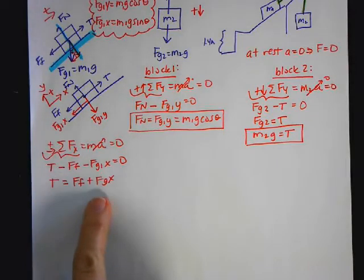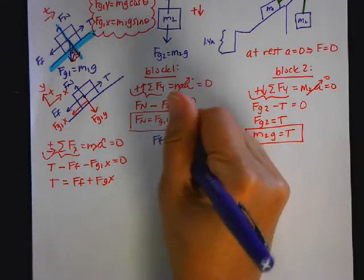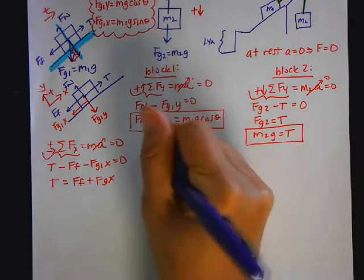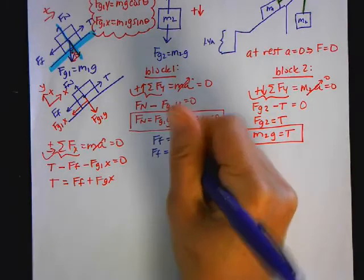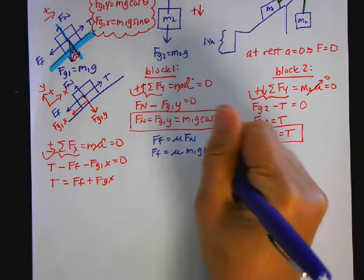And I know what FGX, well, first I'm going to look at FF. Well, I know that FF is equal to mu times FN. So FF is equal to mu times FN, which is M1G cosine of theta.